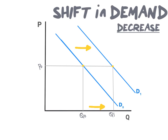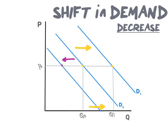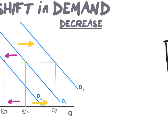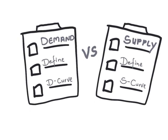Now let's look at a decrease in demand. A decrease in demand is illustrated by a leftward shift of our demand curve, from D0 to D2, giving us new quantity Q2. A decrease in demand will therefore result in a decrease in quantity, while price remains unchanged.